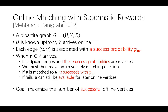Let me give the formal definition. The model also gives a bipartite graph G with offline and online vertices. The difference is that each edge UV is associated with a success probability P_UV. When an online vertex arrives, its adjacent edges are reviewed as well as the success probabilities. When we match it to one of its neighbors U, U will succeed with probability P_UV. If it fails, U can still be available for later online vertices. The goal becomes to maximize the number of successful offline vertices.